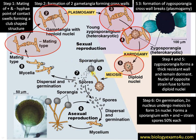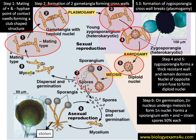Of these spores, 50% are of the plus strain and the remaining 50% are of the minus strain. The spores are released by breakage of the sporangial wall, and on falling on a suitable substratum they develop into new hyphae and mycelium. This completes the sexual cycle in Rhizopus. Now, in the case of asexual reproduction, the mycelium forms a sporangiophore.